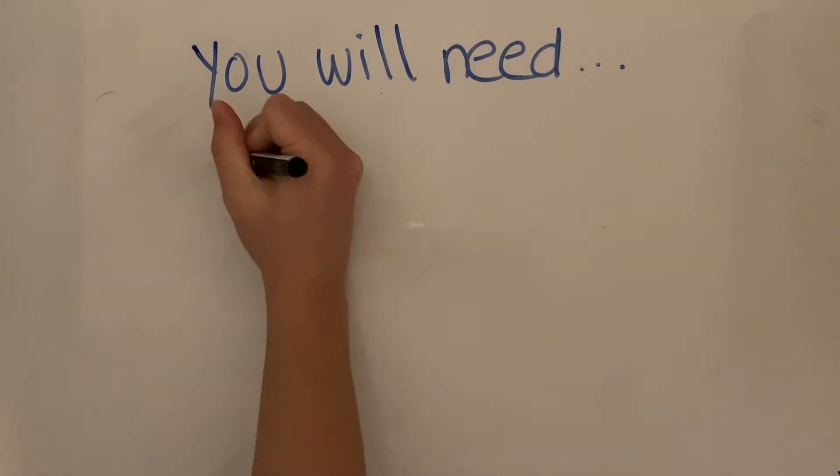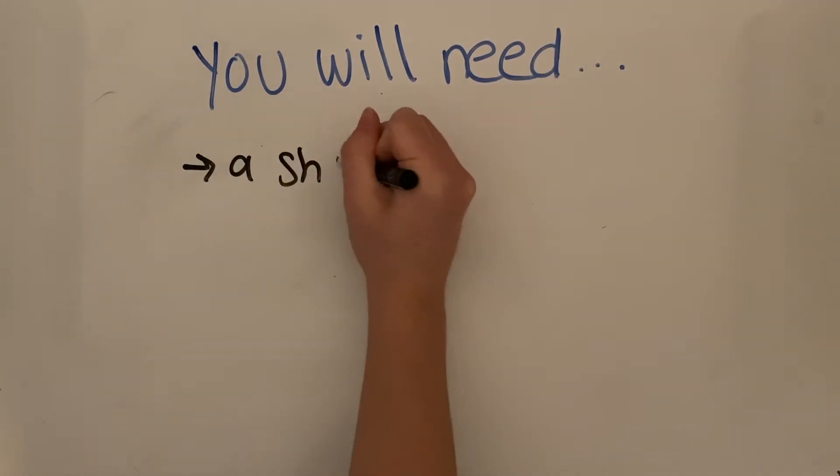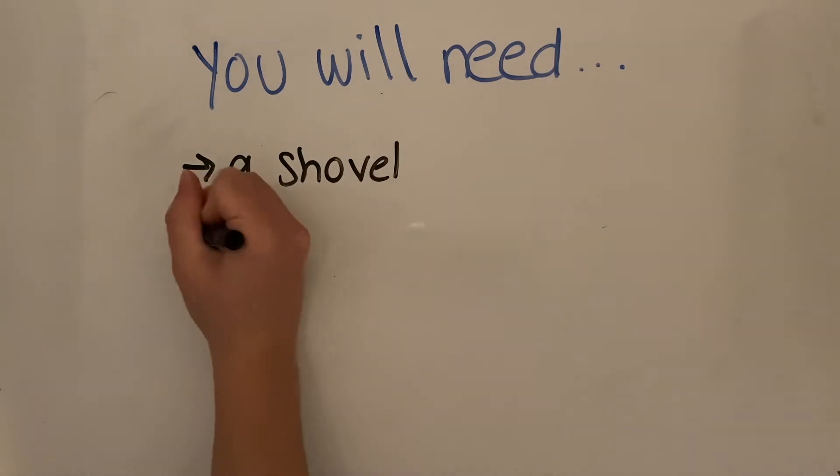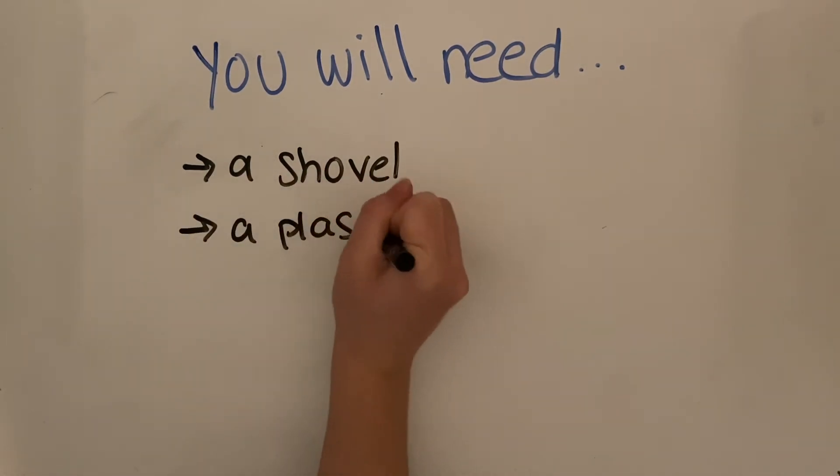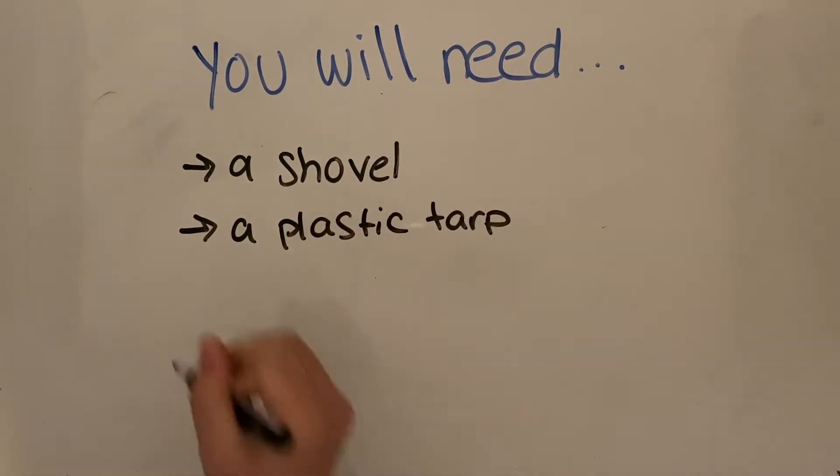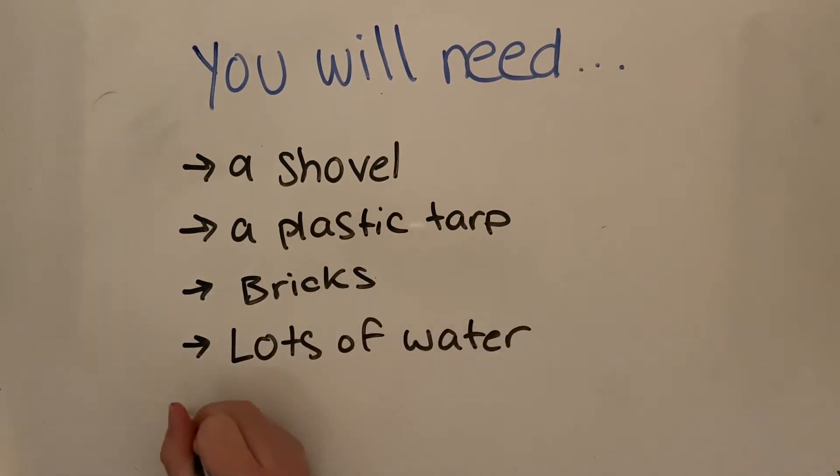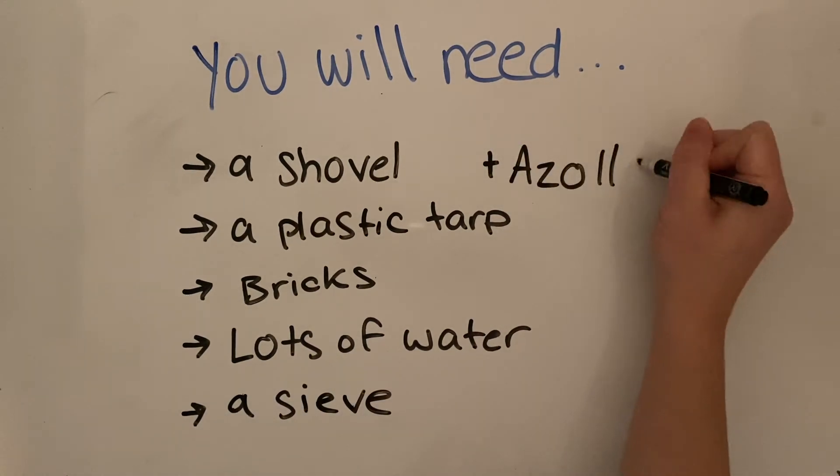You will need a shovel or something to dig with, a plastic tarp, bricks or something heavy that you can secure the tarp with, lots of water, a sieve for harvesting, and Azola culture.